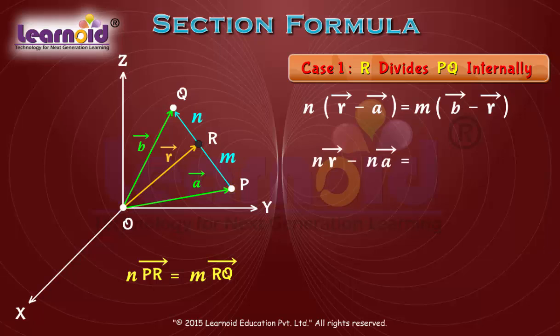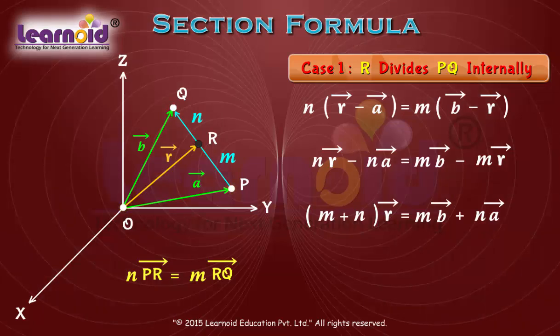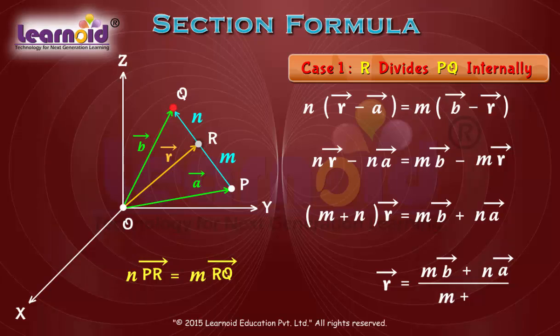On simplifying and finding r vector, we will get r vector is equal to m b vector plus n a vector by m plus n.